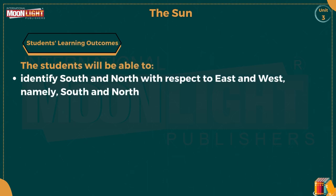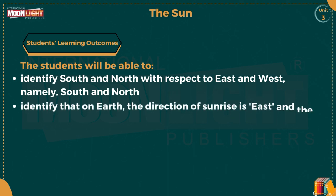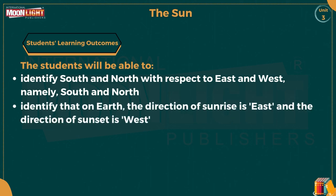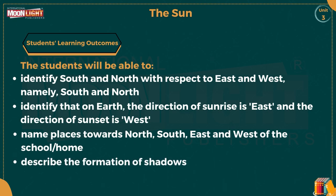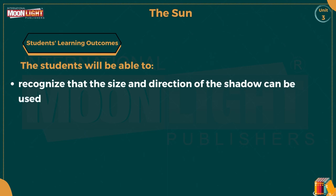First of all, I will discuss the students' learning outcomes. After completing this chapter, the students will be able to: number one, identify South and North with respect to East and West; number two, identify that on Earth the direction of sunrise is East and the direction of sunset is West; number three, name places towards North, South, East, and West of the school or home; and describe the formation of shadows.